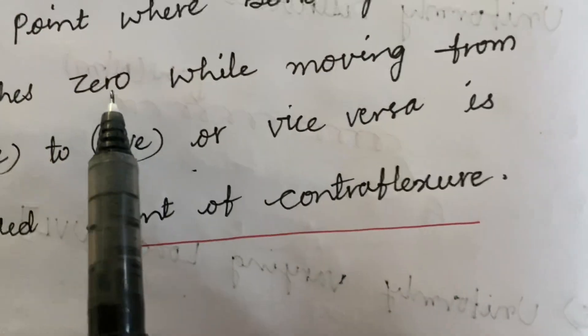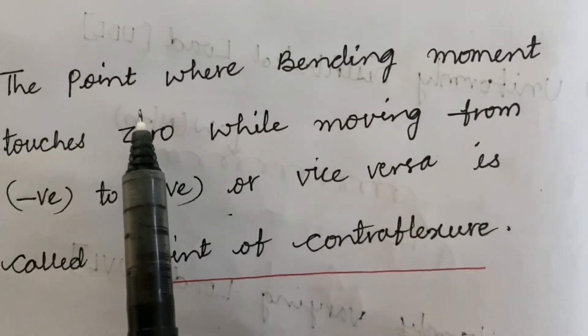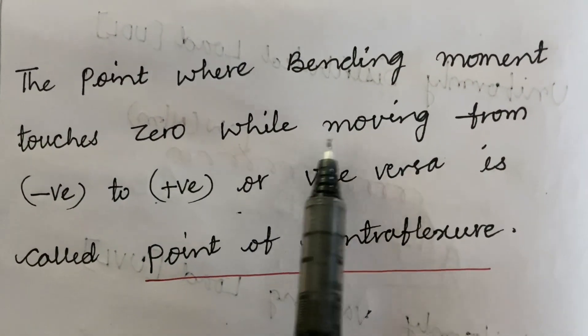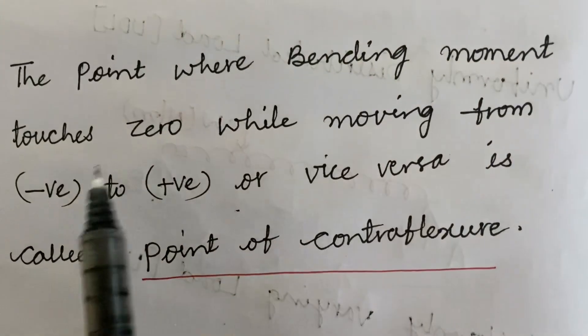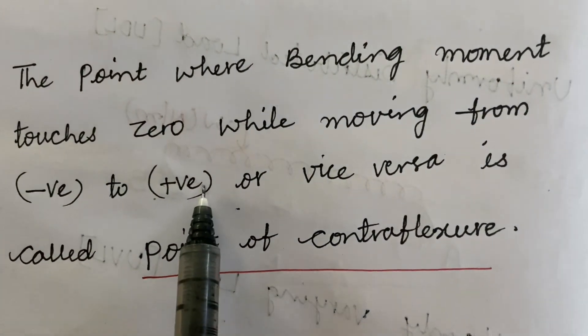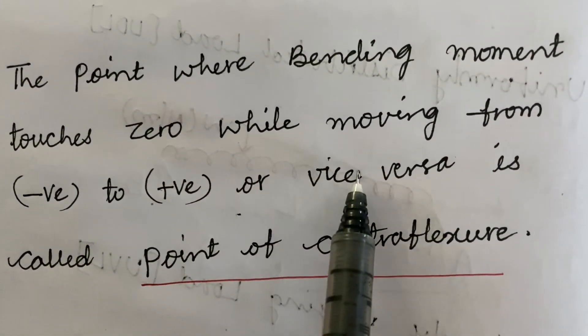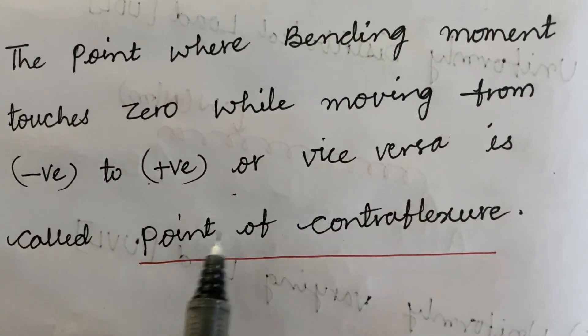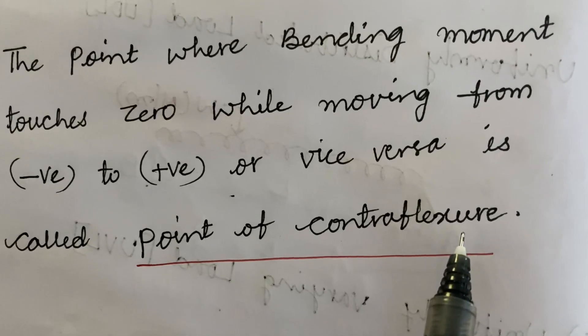Coming to the point of contraflexure: the point where the bending moment touches zero while moving from negative to positive, or vice versa, is called the point of contraflexure.